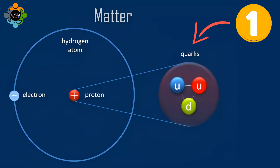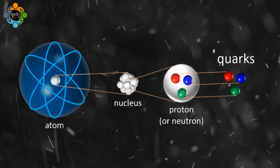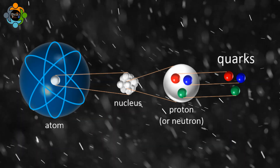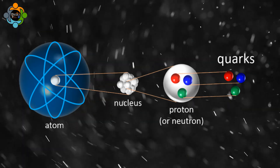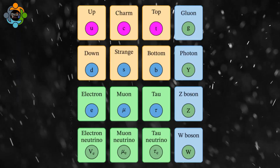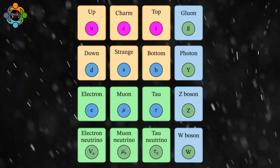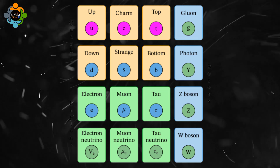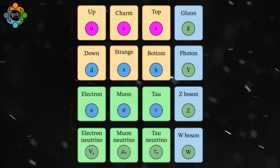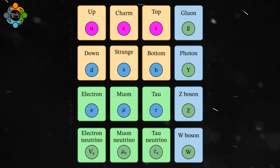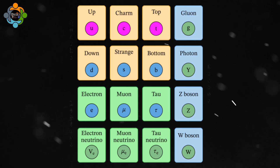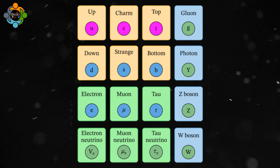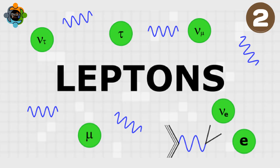Number one: quarks. These are the building blocks of protons and neutrons. There are six types, grouped into three generations. Up and down quarks are the most common, while the others have fun names like charm, strange, top, and bottom.